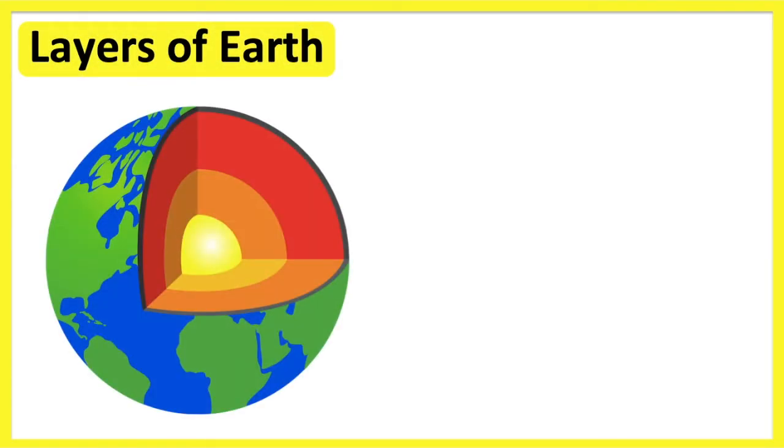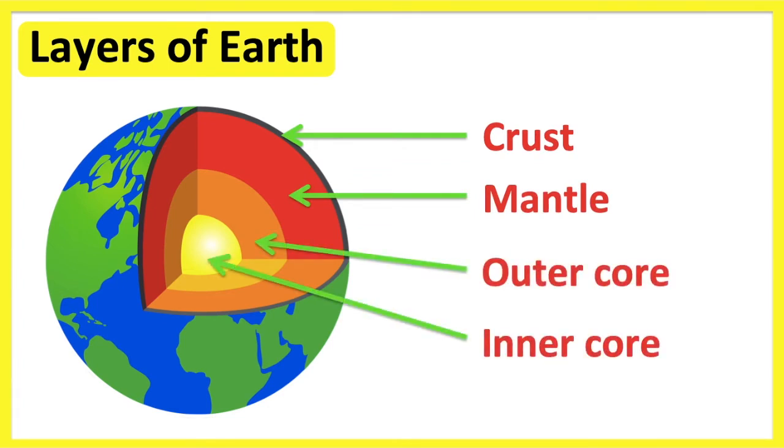The earth has four layers. These include the crust, mantle, outer core, and inner core.